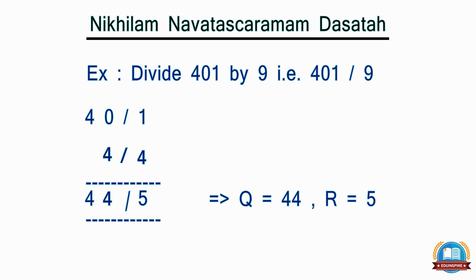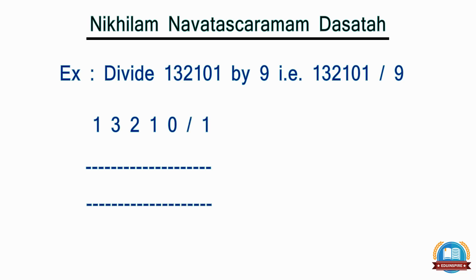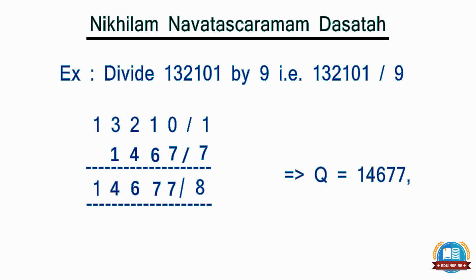Now let's take a bigger example: 132101 divided by 9. We follow the same steps. First, split the number by putting a slash before the last digit. Second, take down the first digit as it is under the horizontal line. Take this digit and add it with the second digit of the number. Keep doing this till the last digit to get the remainder. This gives us the final answer: quotient as 14677 and remainder as 8. This is how we can divide any number by 9 without facing any issue.